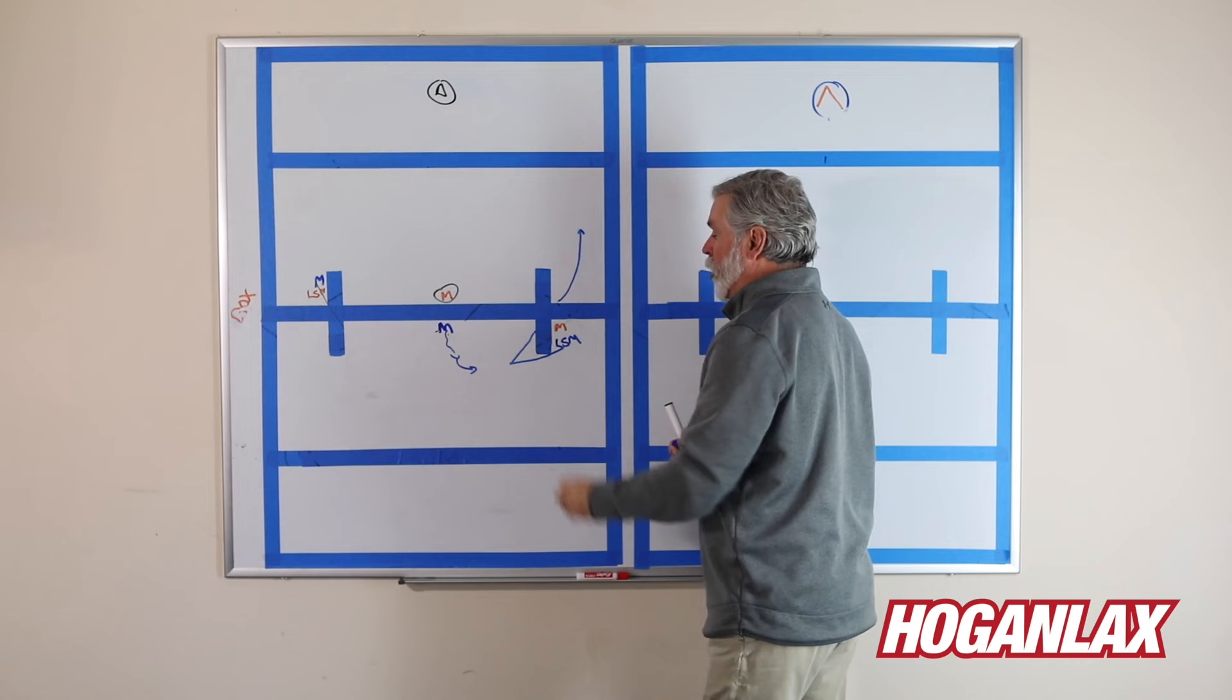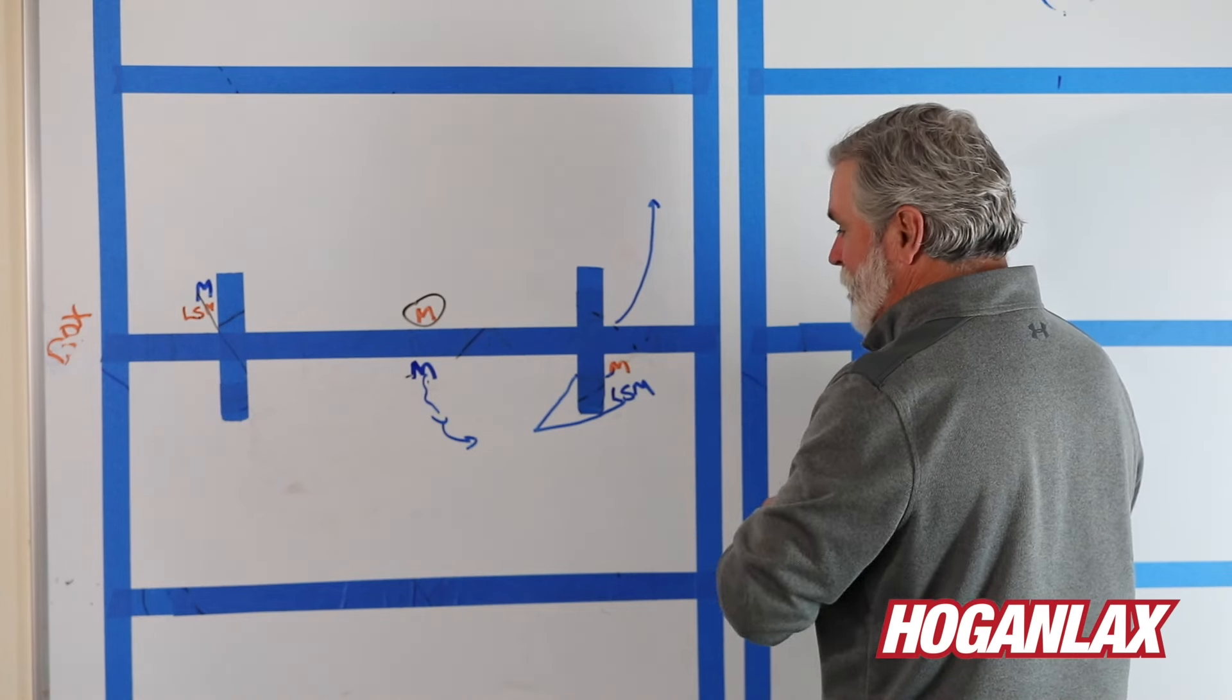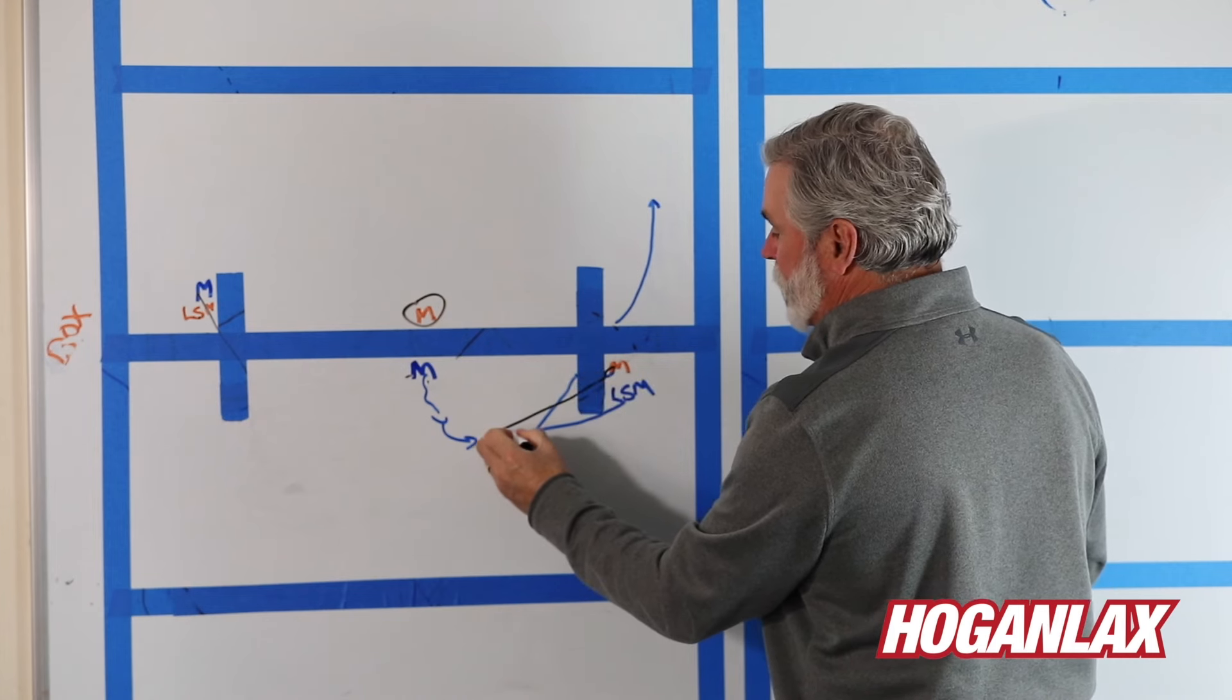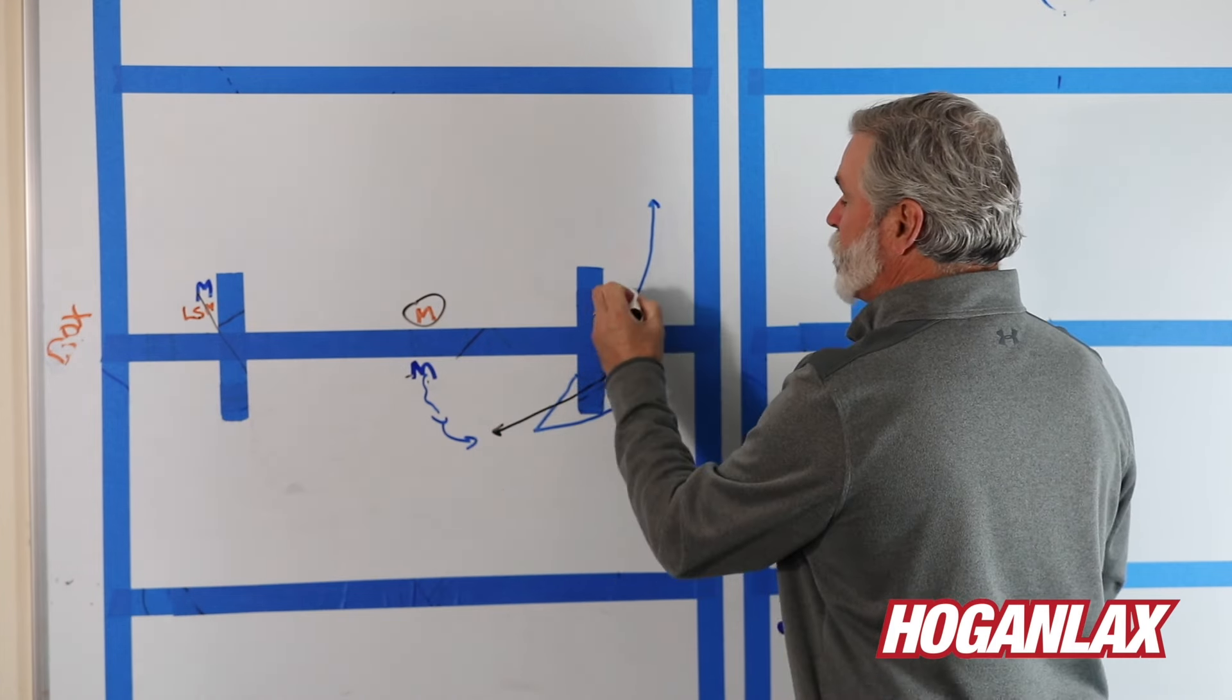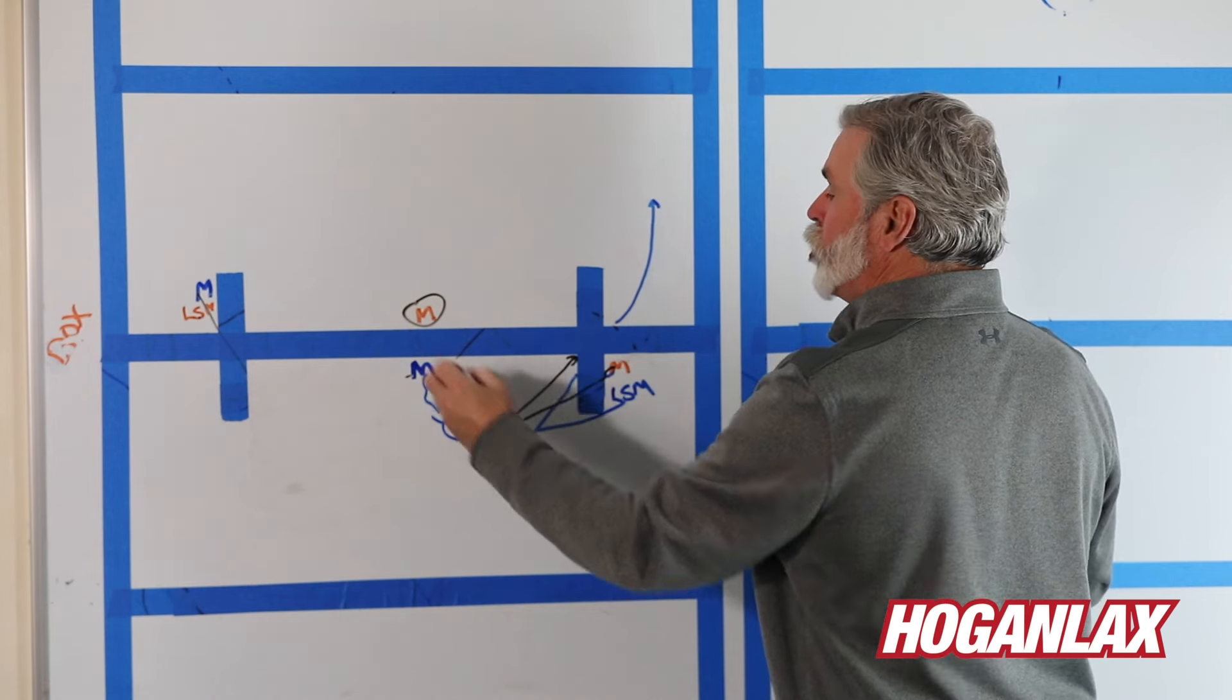If this man, if the orange guy double teams the short stick, the face-off guy, then he throws him, you've got to break. Most of these guys are going to go with him, which creates room for him.